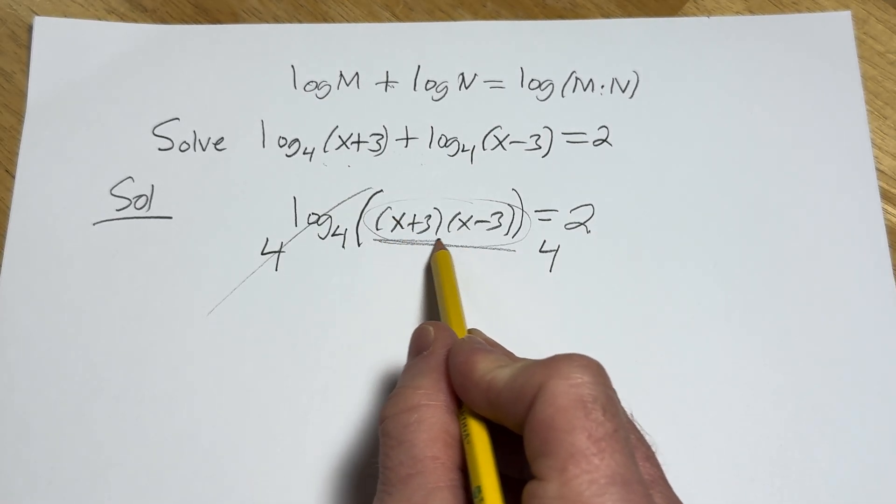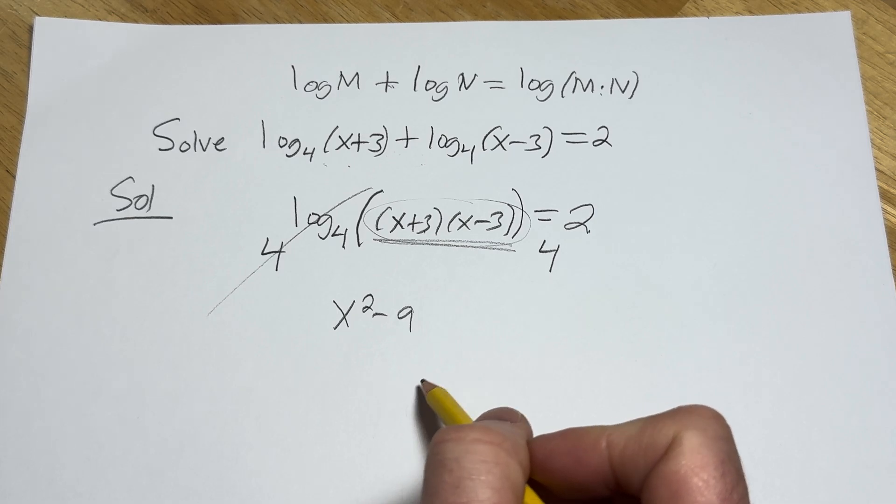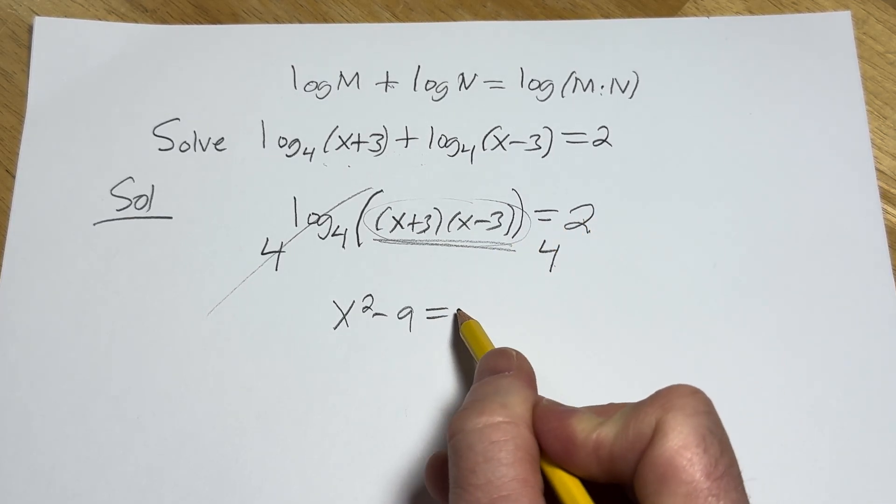So you end up with this, which is the difference of squares, x squared minus 9, right? Because it's x squared minus 3 squared. And that's equal to 4 squared, which is 16.